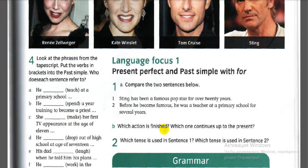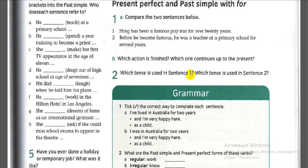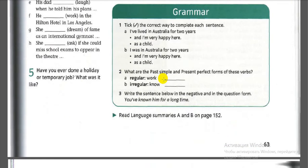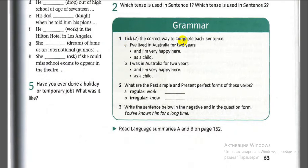Which action is finished? Answer: 'became famous' and 'was a teacher' — that is the finished action. Which one continues up to the present? The first sentence continues up to the present. Which tense is used in sentence one, and which tense is used in sentence two?